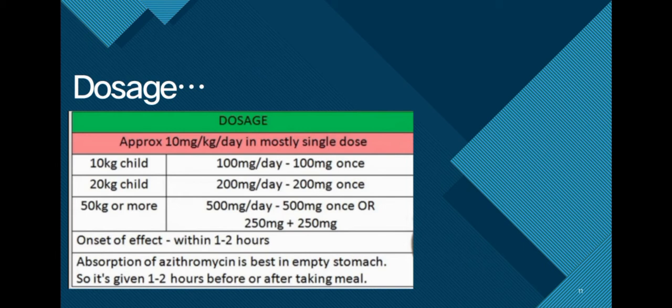For example, if the person or the child is 10 kg, you can give him 100 mg once a day. And if the child is 20 kg, you can give him 200 mg once a day. And 50 kg or more: 500 mg or two doses of 250 mg. It shows its effect within one to two hours and it should be given one to two hours before or after taking meal because absorption of azithromycin is best on empty stomach.